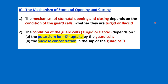Now let's discuss the mechanism of stomatal opening and closing. The mechanism depends on the condition of the guard cells — whether they are turgid, meaning full of water and firm, or flaccid, meaning they lack water. The condition of the guard cells in turn depends on the potassium ion (K+) uptake by the guard cells and the sucrose concentration in the guard cells. Let's find out how these two factors affect the condition of the guard cells.